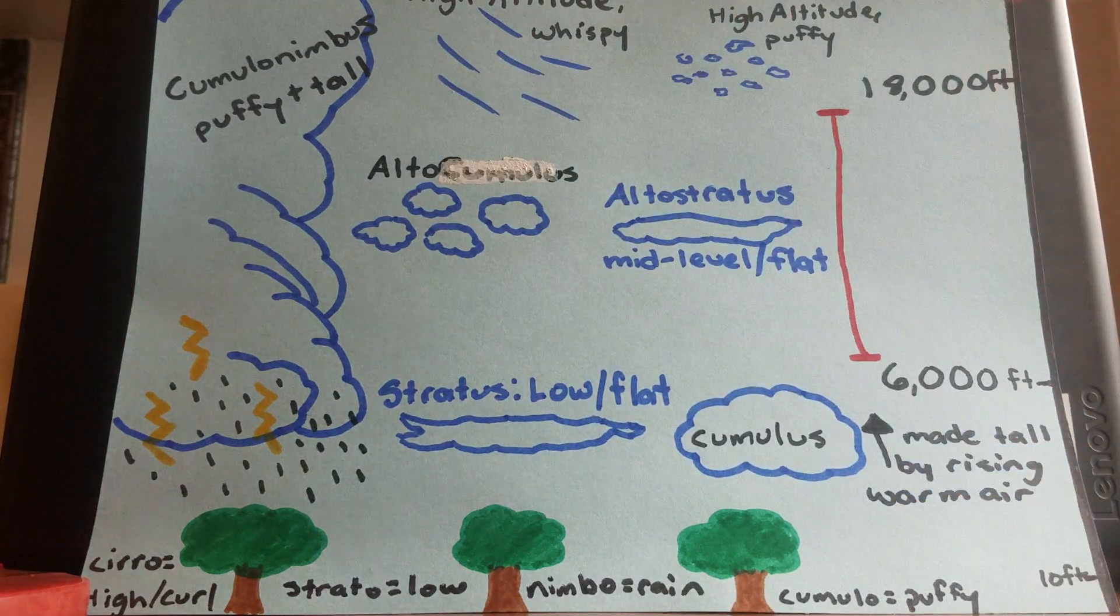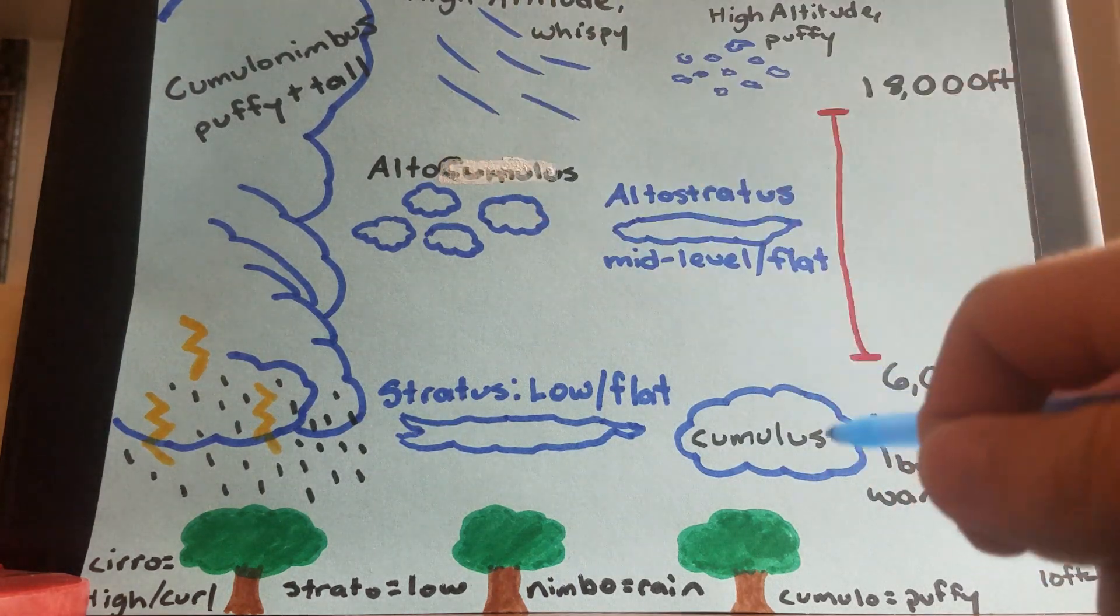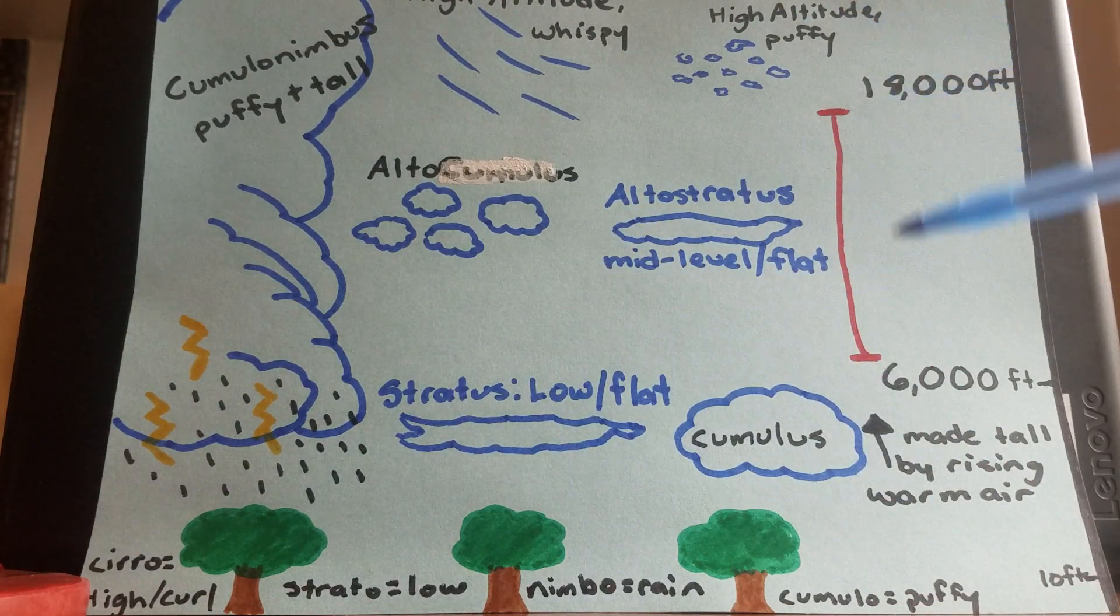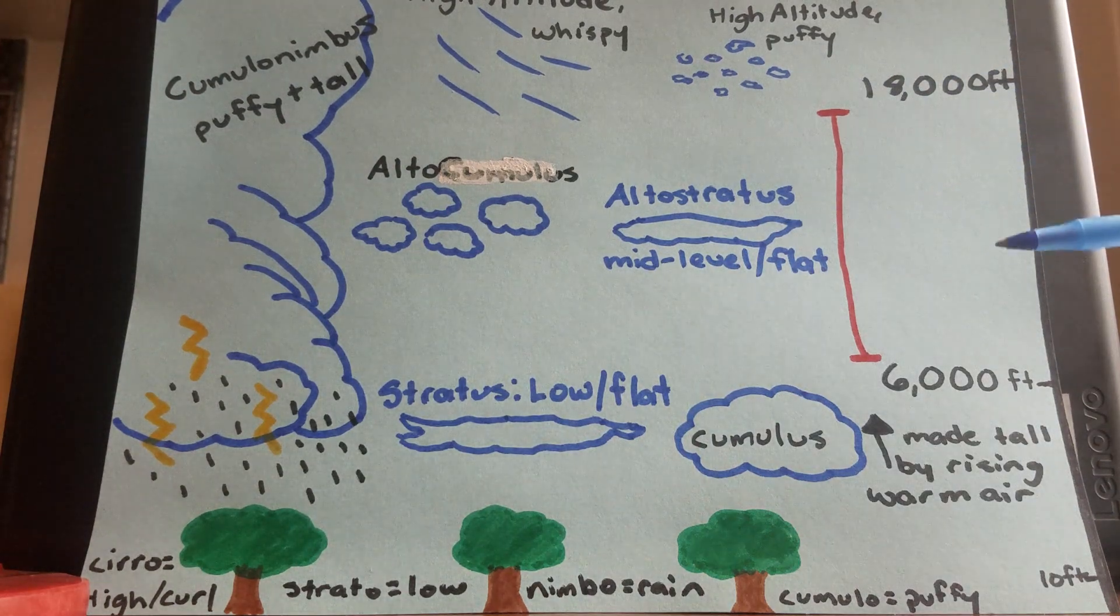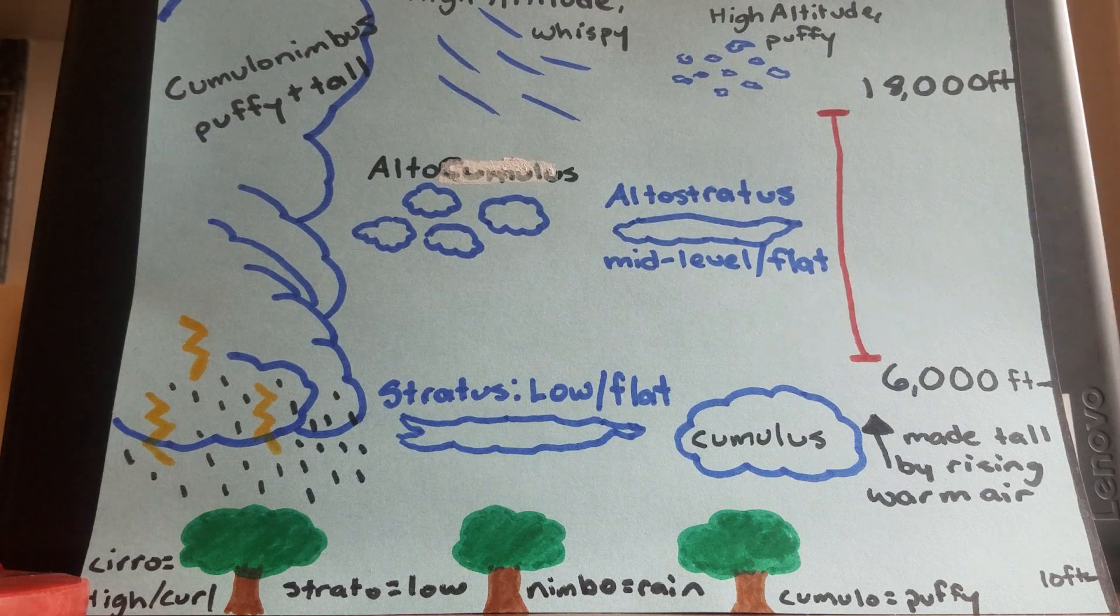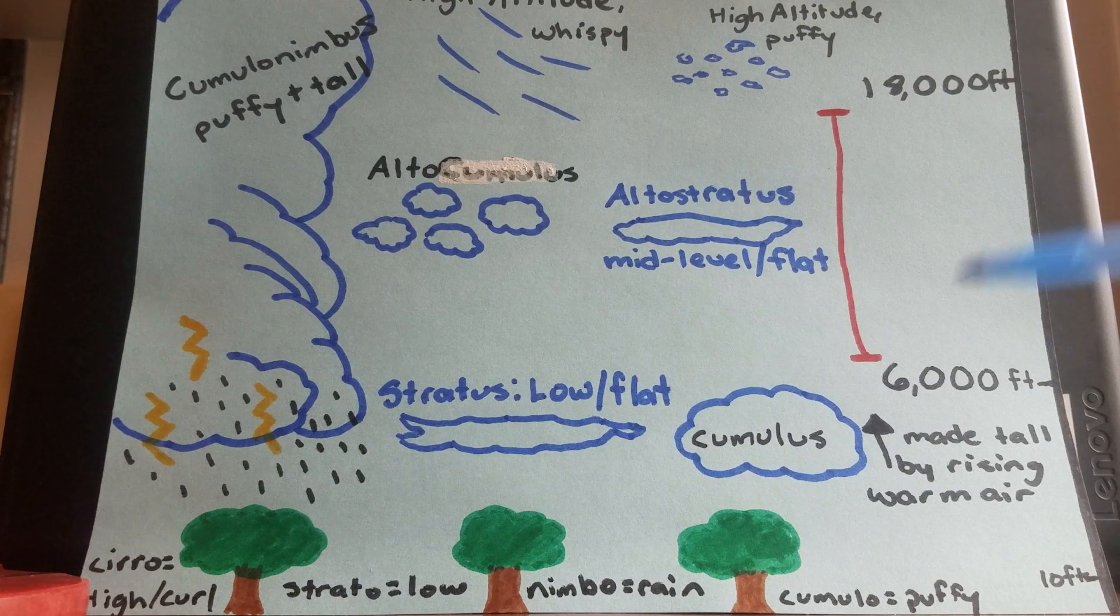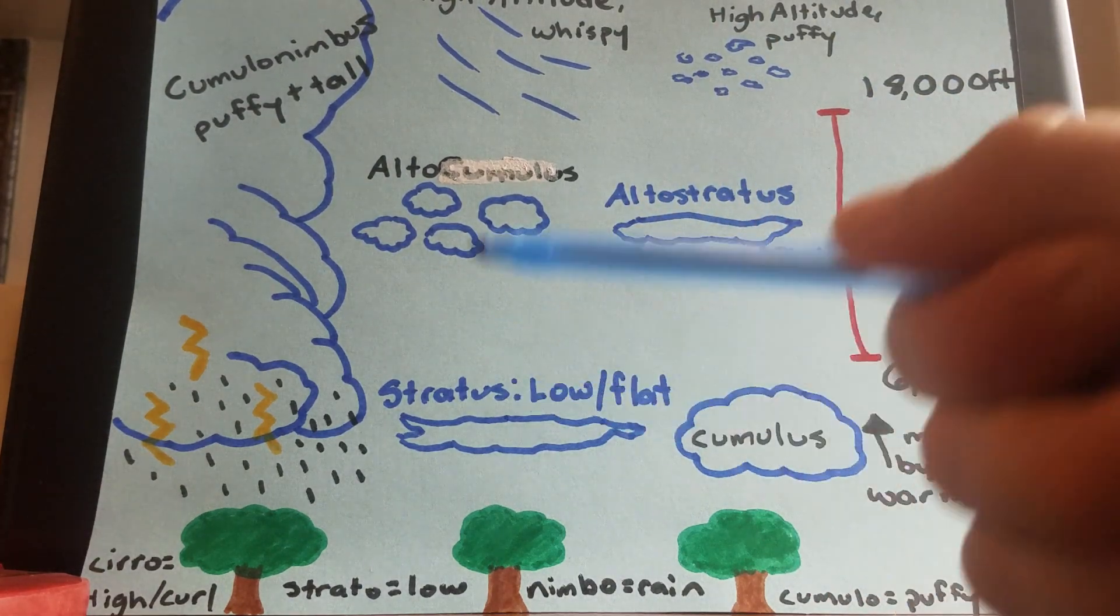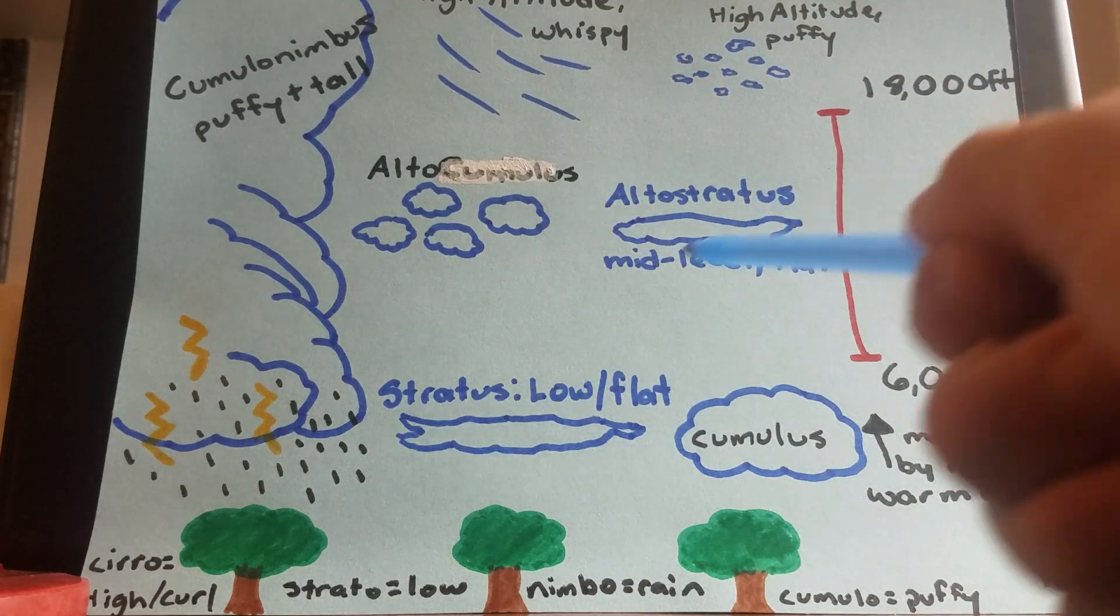Next up, you have altocumulus. So altocumulus clouds are puffy like your typical cumulus cloud, but they are situated in the middle part of the troposphere. So we're talking about 6,000 feet to roughly 18,000 feet up. You have altocumulus clouds. Like I said, very puffy, situated in the middle part of the troposphere. And then you have altostratus clouds. Altostratus clouds are like your typical stratus clouds, but they're situated in the middle part of the troposphere. Mid-level, flat.